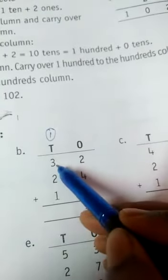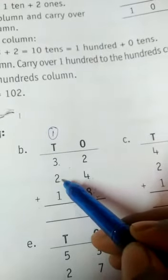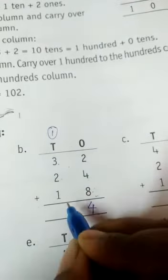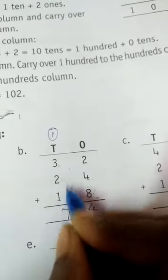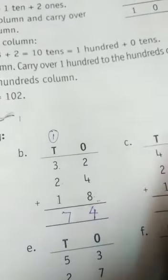Then 1 plus 3 is equal to 4, 4 plus 2 is equal to 6, 6 plus 1 is equal to 7. So 32 plus 24 plus 18 is equal to 74. Clear?